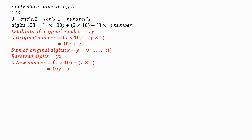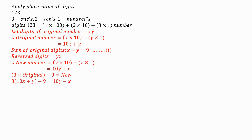The new number is 10Y plus X. We've been told the new number is nine less than three times the original number, so three times the original number minus nine equals the new number. We substitute: 3 times (10X plus Y) minus 9 equals 10Y plus X. Opening the bracket, we have 30X plus 3Y minus 9 equals 10Y plus X. We then put the like terms together.